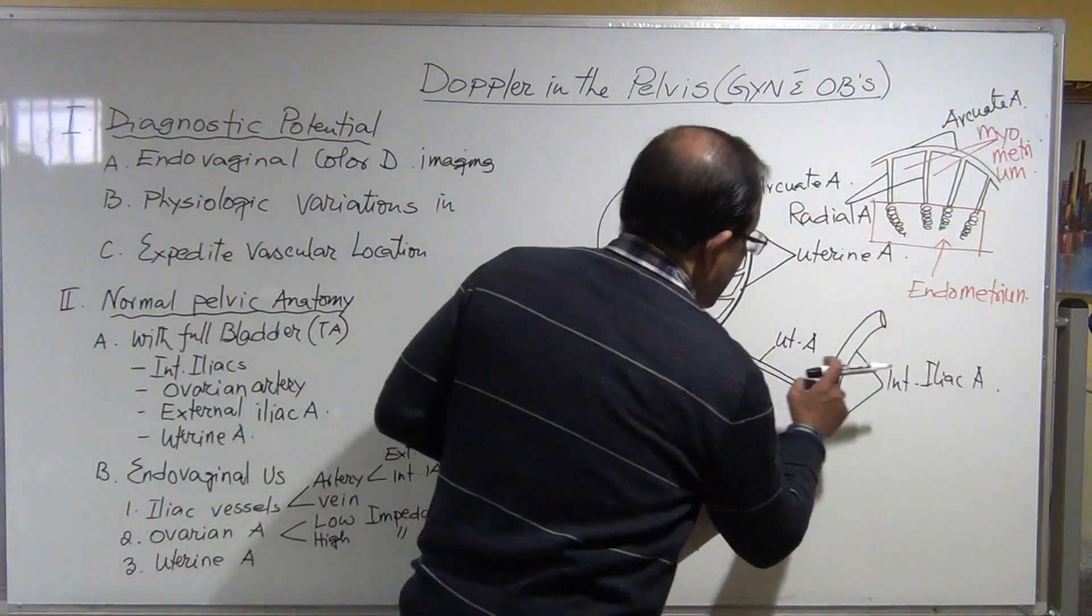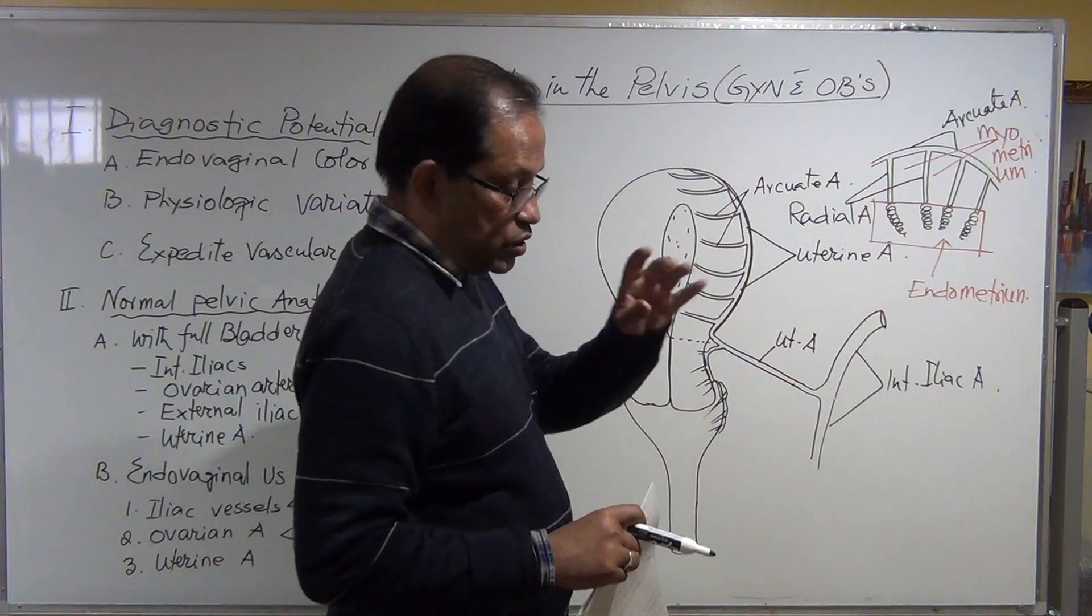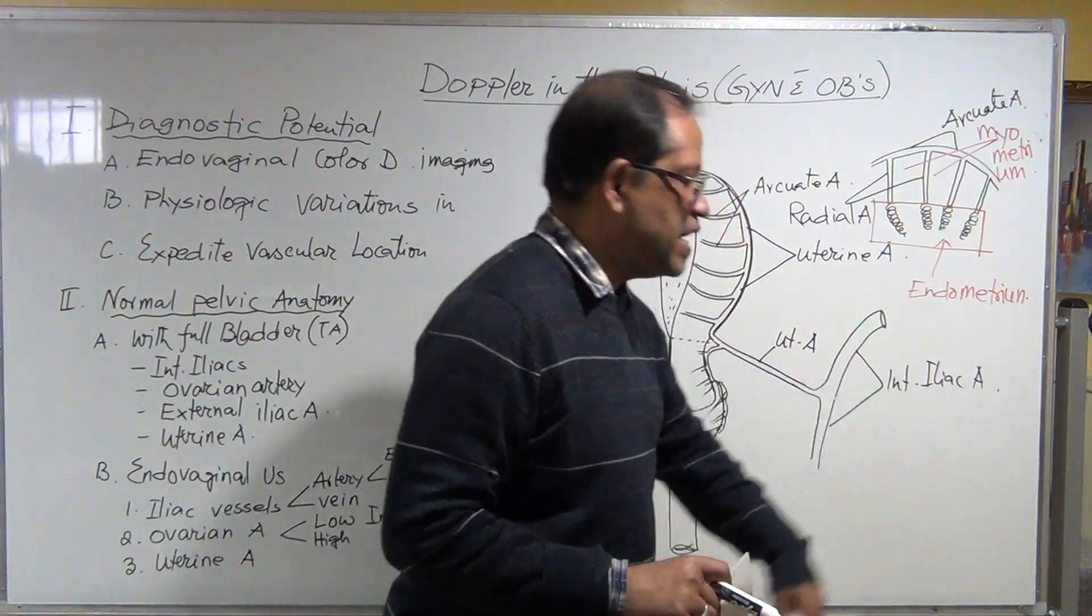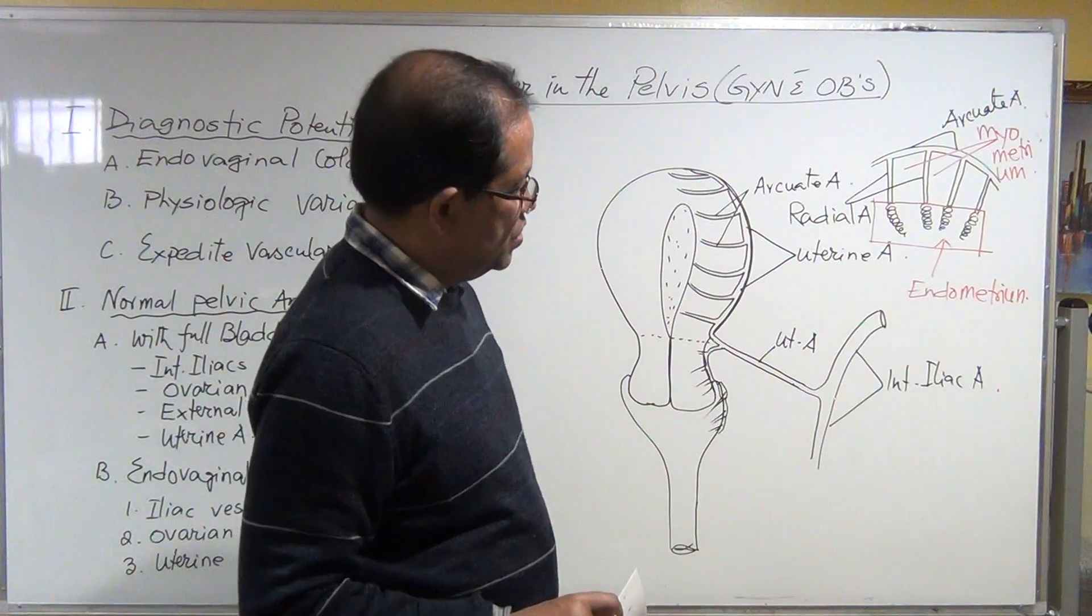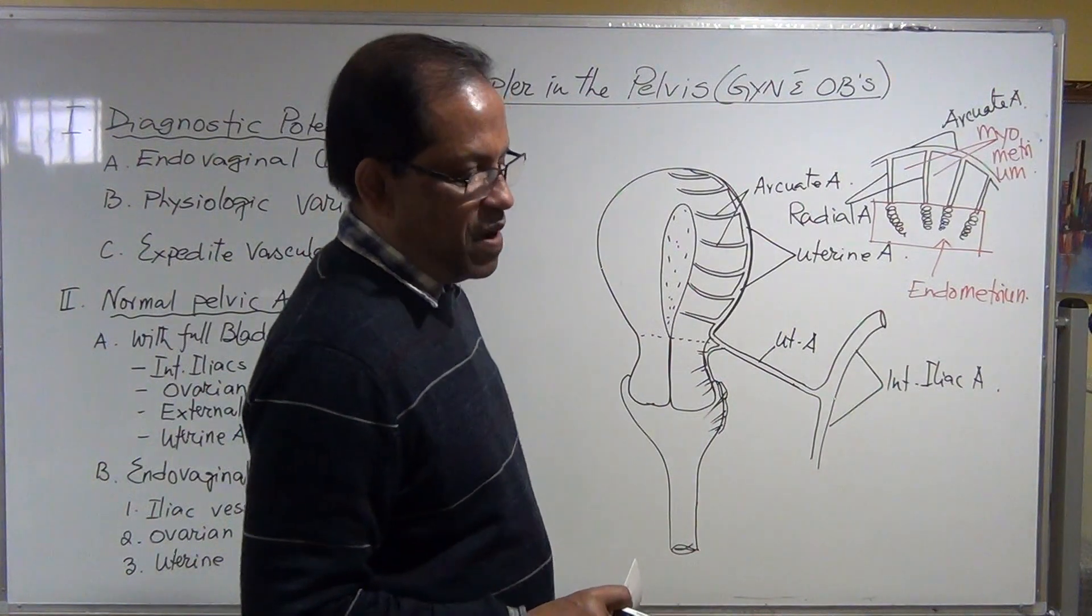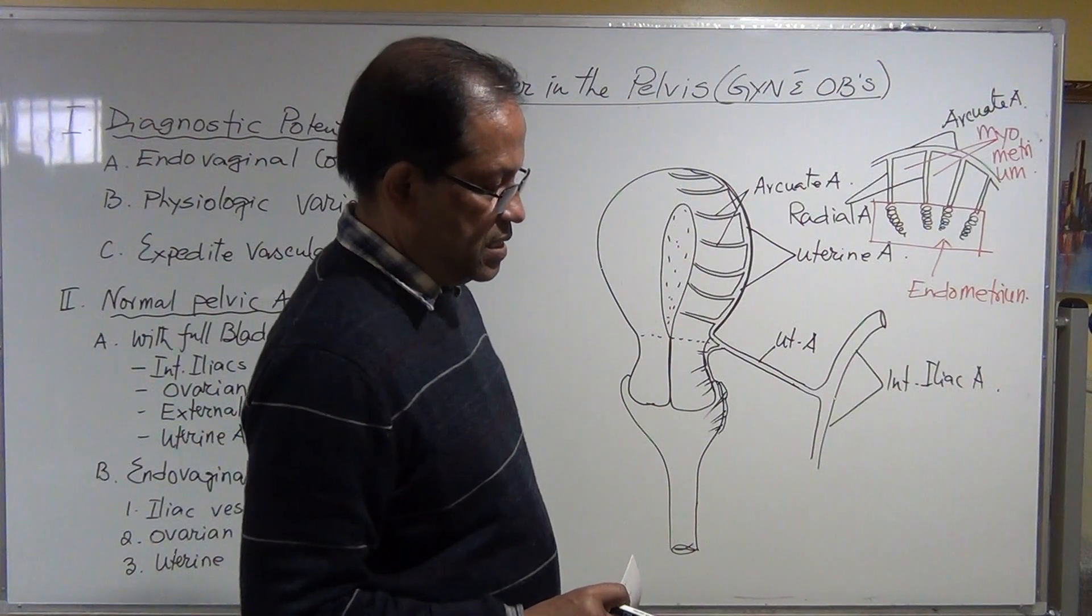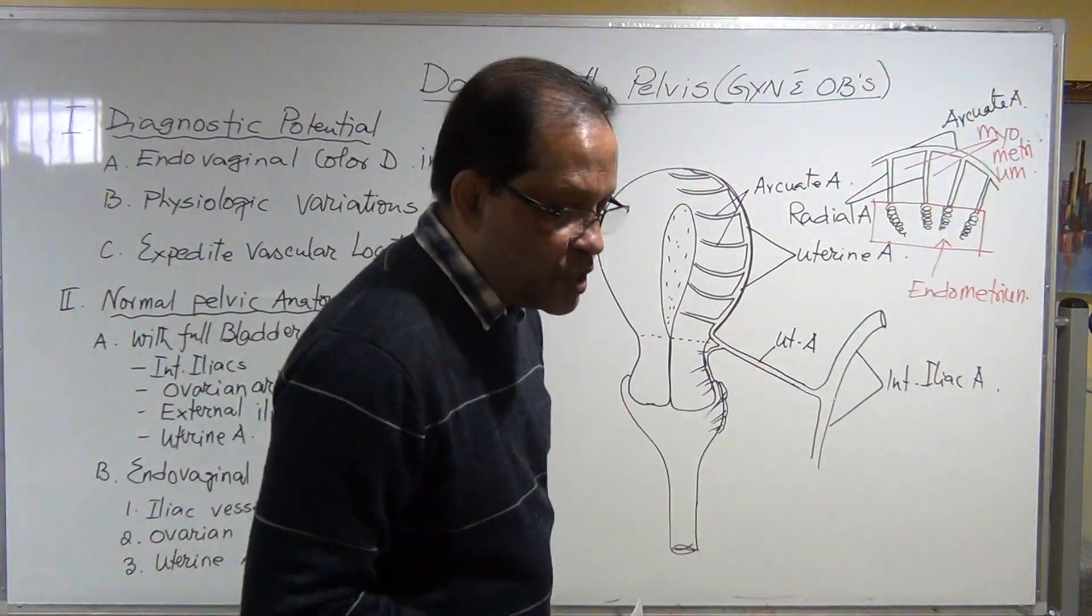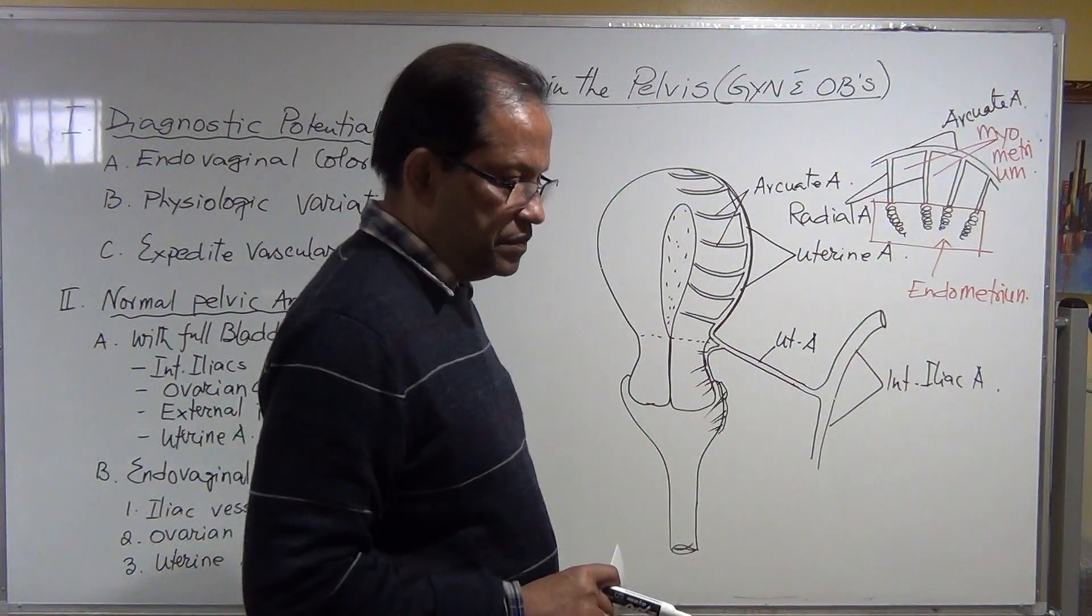If this uterine artery is somehow partially obstructed or has flow limiting disease, there might be internal iliac artery thrombosis, blood clot, atherosclerosis. There might be blockage at the junction or bifurcation of the aorta at the level of common iliac arteries.